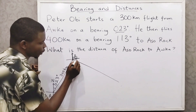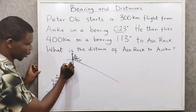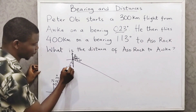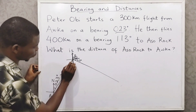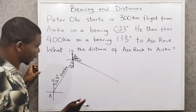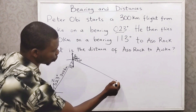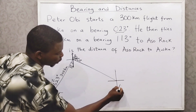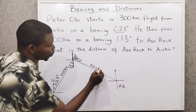This angle here is 23 degrees, and this corresponding angle will also be 23 degrees because it is an alternate angle. So this is 23 degrees as well. This leg is 300 kilometers and this one is 400 kilometers. He gets to Asurok — let me name that as AR — and this is 400 kilometers.